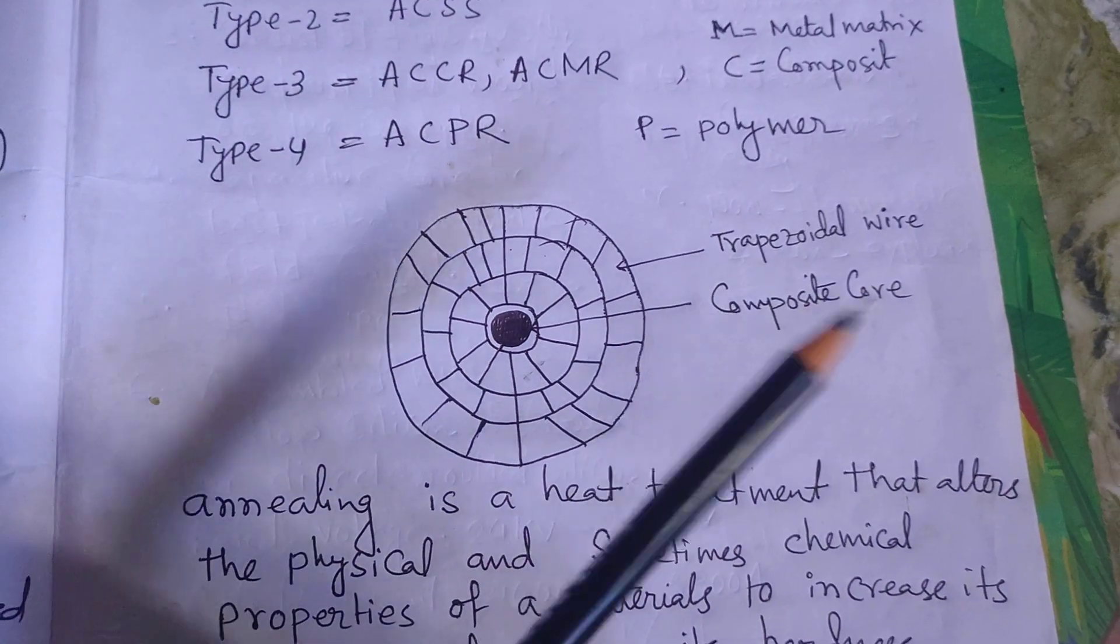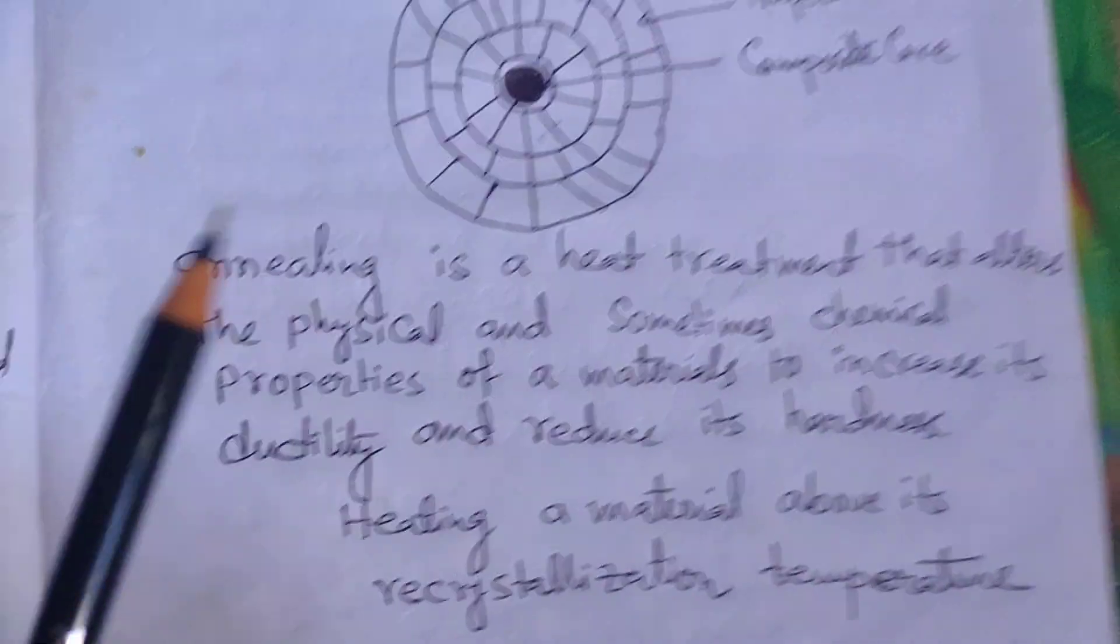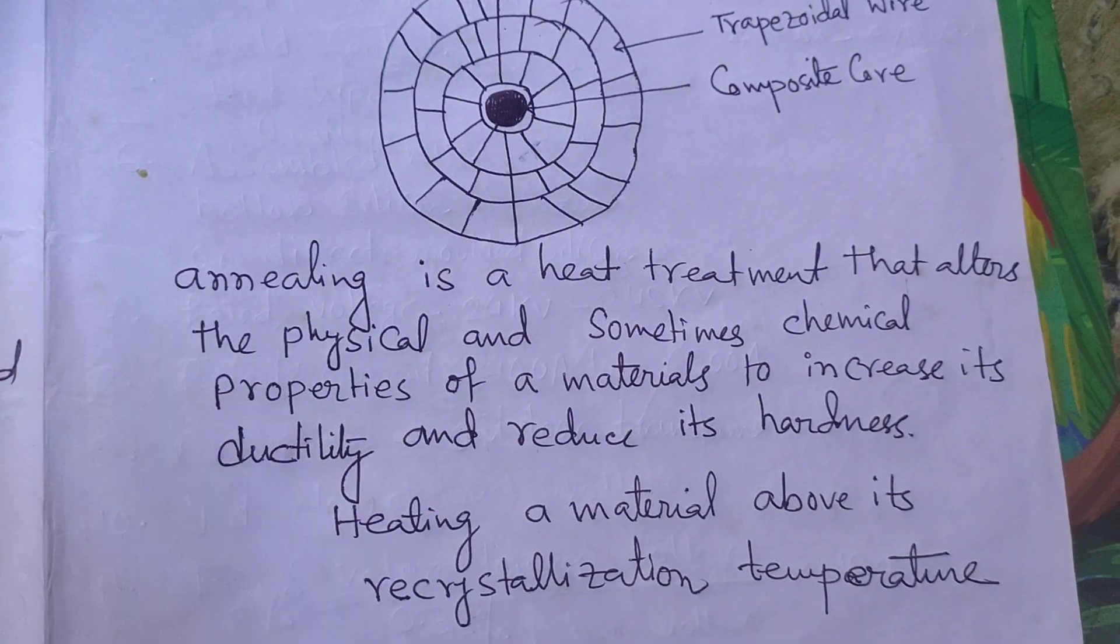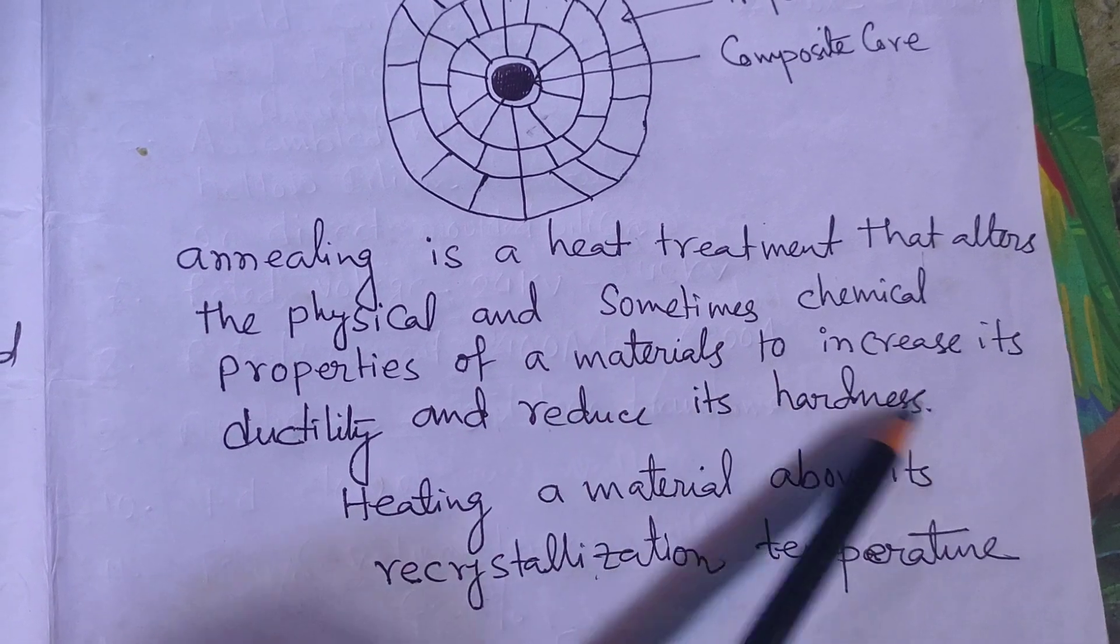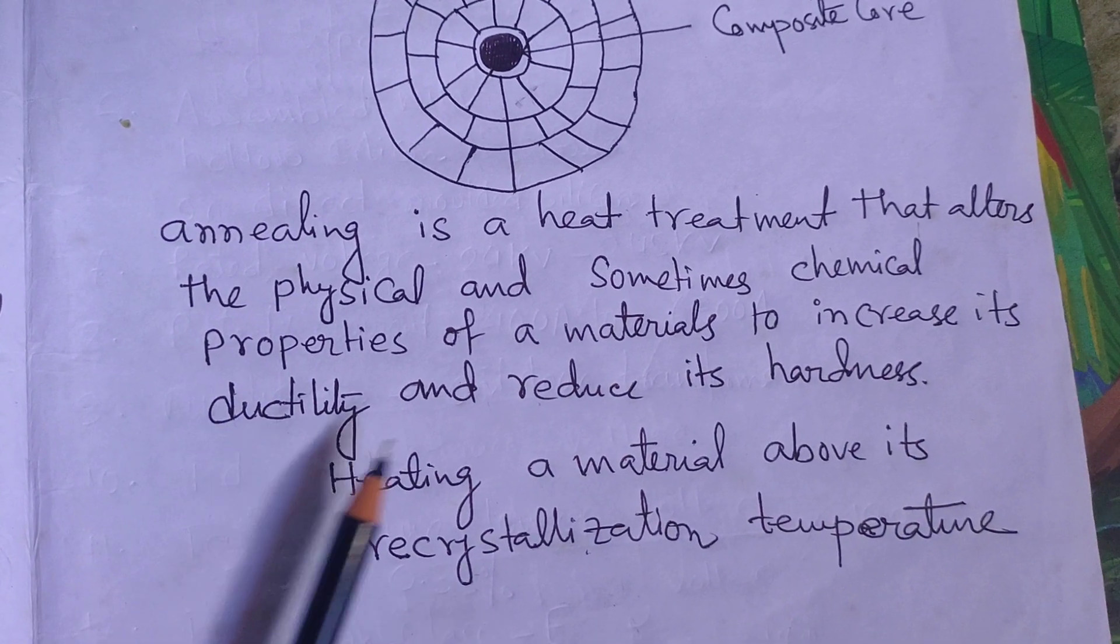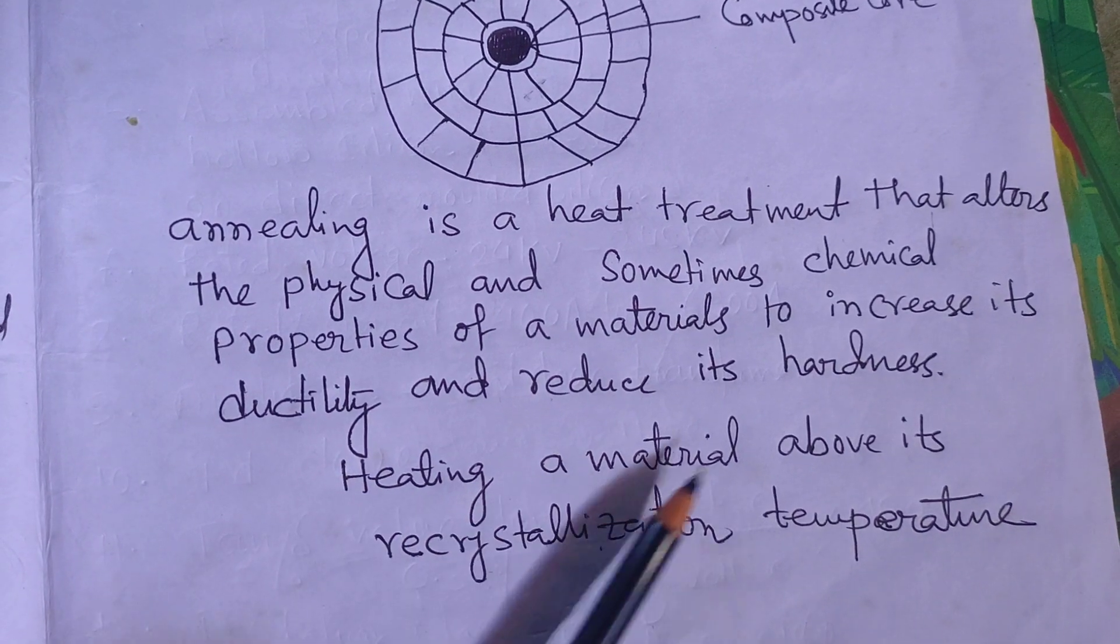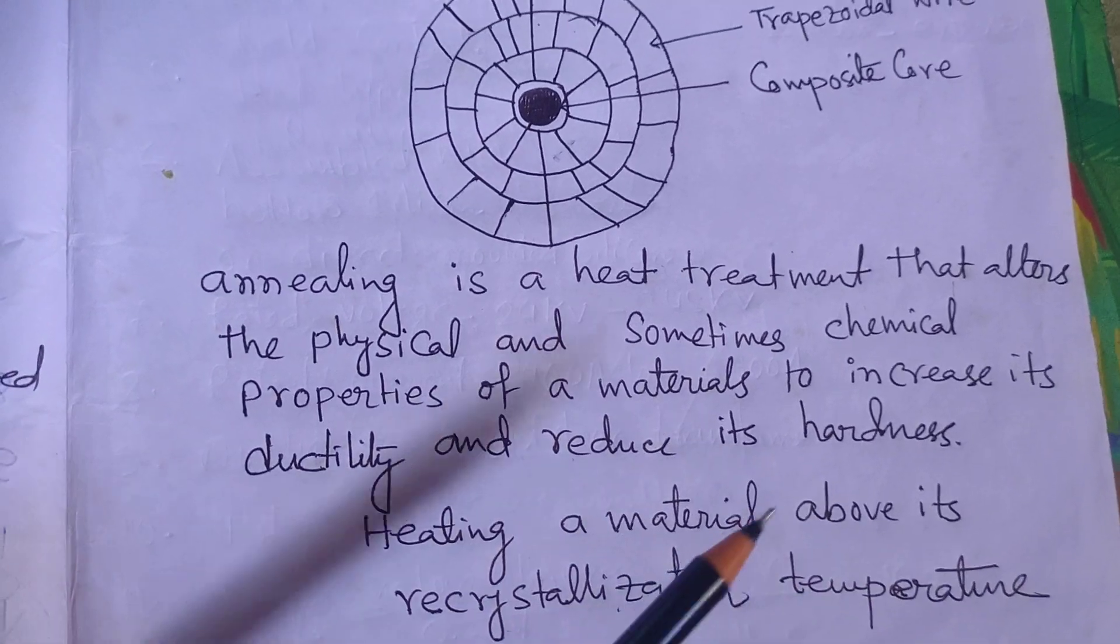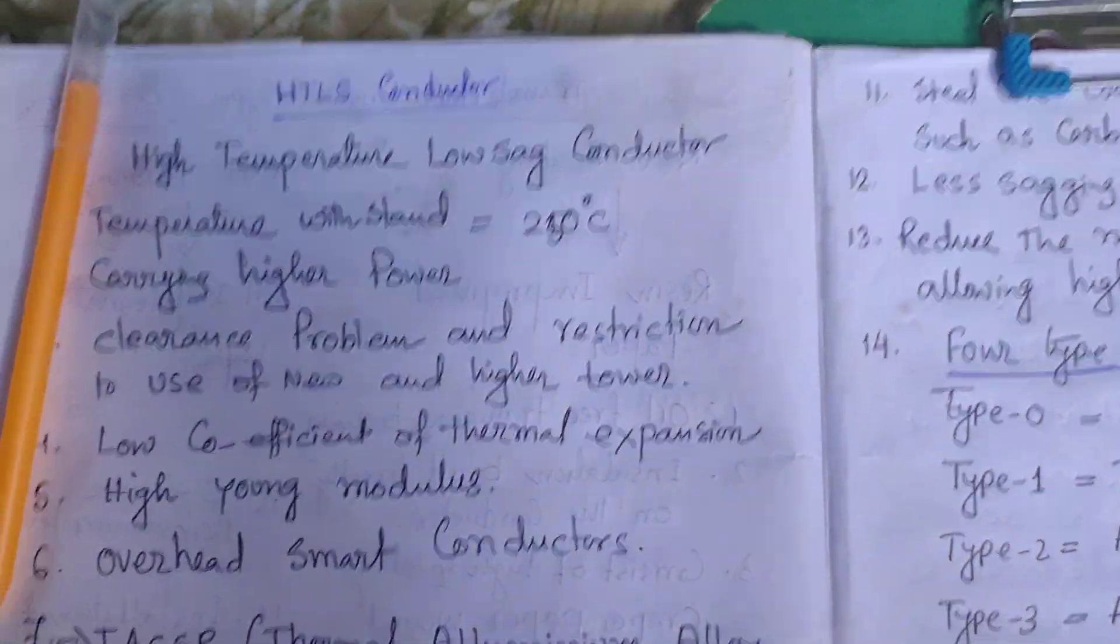We will discuss annealing. Annealing is a heat treatment that alters the physical and sometimes chemical properties of a material to increase its ductility and reduce its hardness. It involves heating a metal above its recrystallization temperature. HTLS conductors are being used for the same purpose.